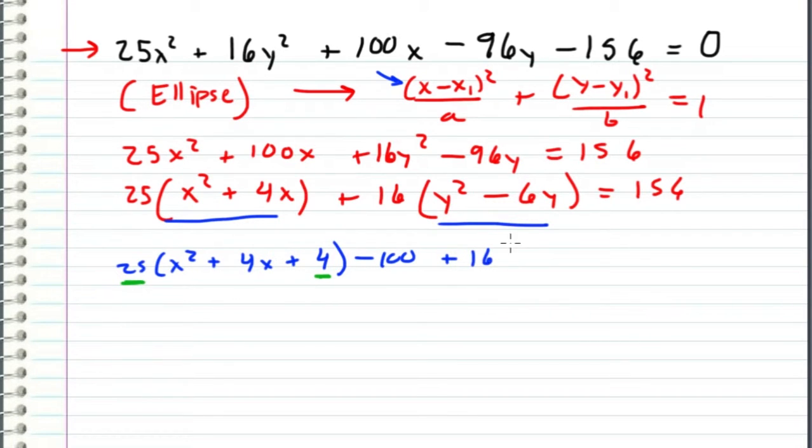And then I do the same thing over here, except I add in a 9. And since I added in a 9, this is being multiplied by 16. So I have to account for that by subtracting 16 times 9, which is 144. And the right side of this equation remains the same, 156.